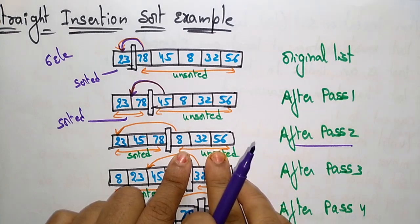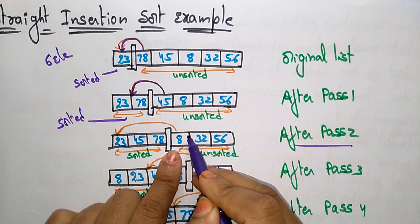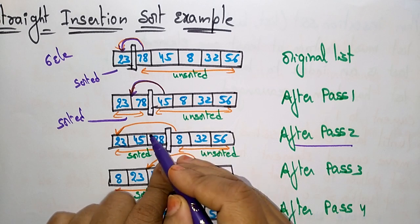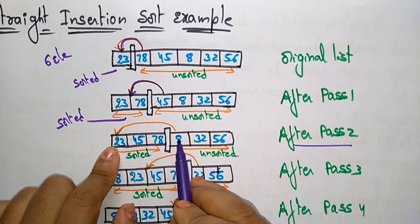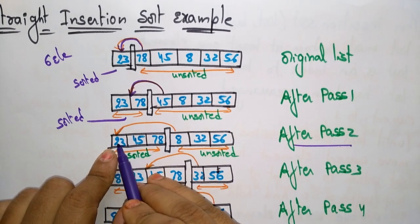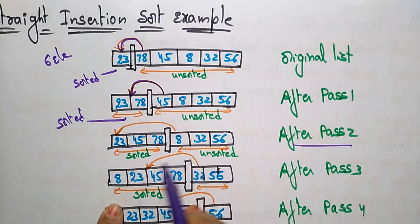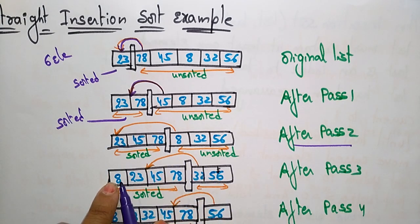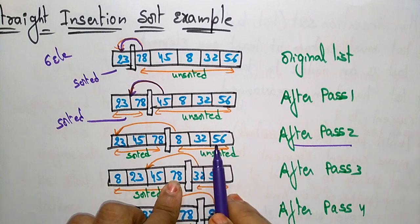Again, apply the stride insertion. The first element has to be shifted to the sorted list. 8 has to be shifted before 23 because 8 is less than 23. So just shift 8 before 23. This becomes a sorted sublist: 8, 23, 45, 78. The remaining unsorted elements are 32 and 56. That is after pass three.